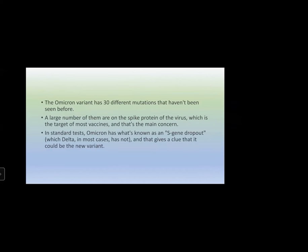The Omicron variant has 30 different mutations not seen before, almost all in the spike protein. The spike protein — the ray-like projection on the outer surface of the nucleocapsid — attaches the virus to the ACE2 receptor of the host. The spike protein is the target of most vaccines, and that is the most concerning thing: with so many mutations in the spike protein, vaccines already given may not provide adequate protection. As such, vaccines are also less protective after seven to nine months, and yearly boosters are being considered by ICMR and have already been started in the UK, USA, and European countries.